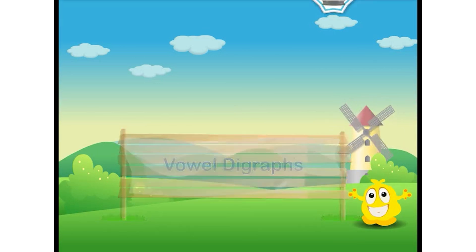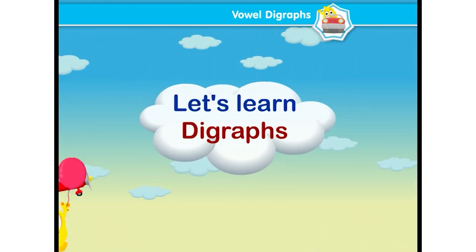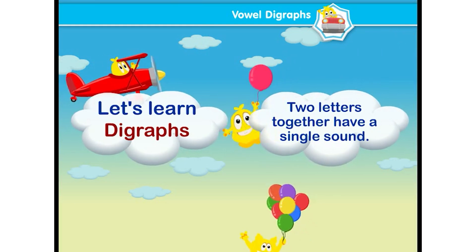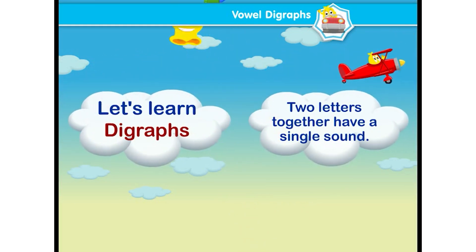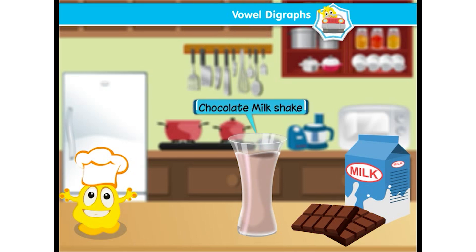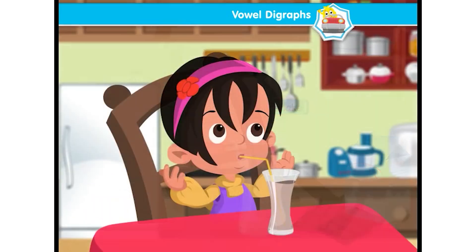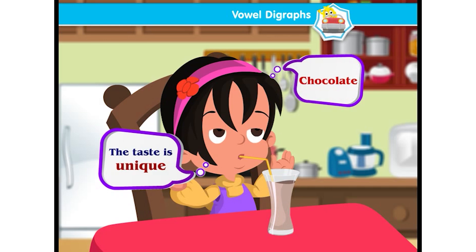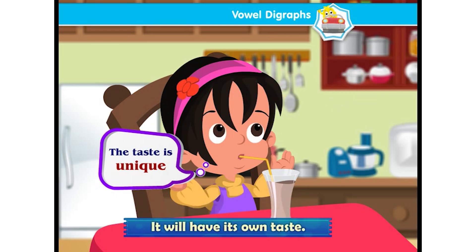Vowel Digraphs. Hey kids, now let's learn digraphs. In digraphs, two letters together have a single sound. Let's understand through an example. If we add chocolate syrup in milk, what we get is a milkshake. And if you taste it, the taste is unique. It won't taste like milk sometimes and like chocolate other times. It will have its own taste. Same in digraphs — when two letters unite together, they have a single sound.